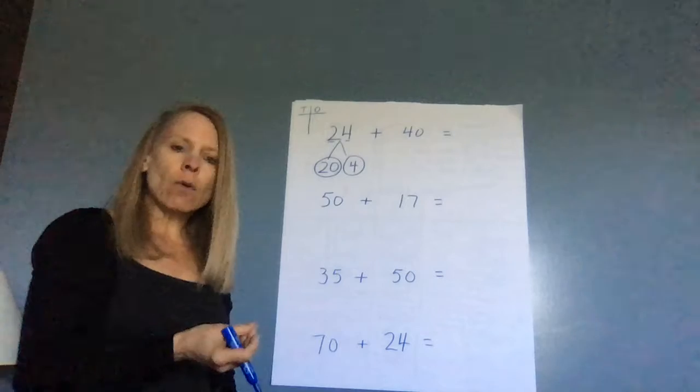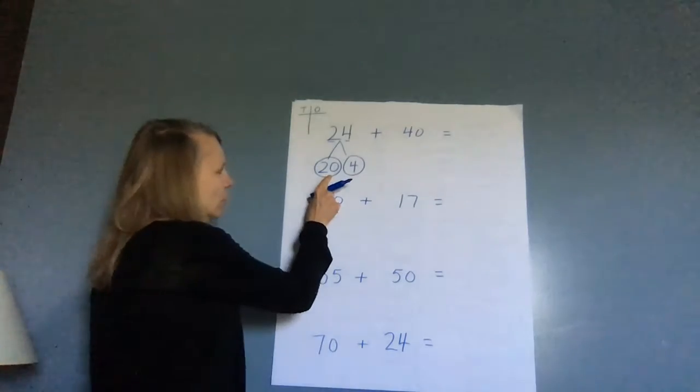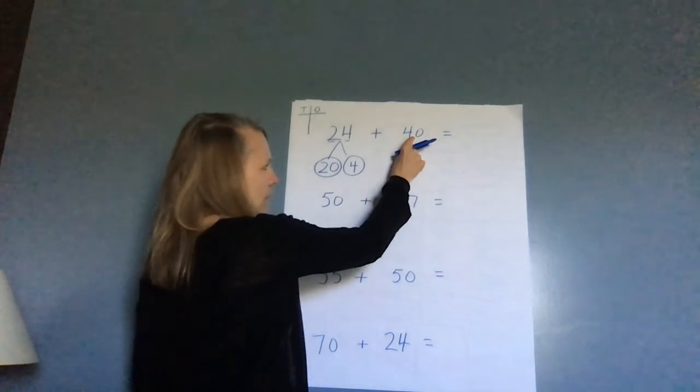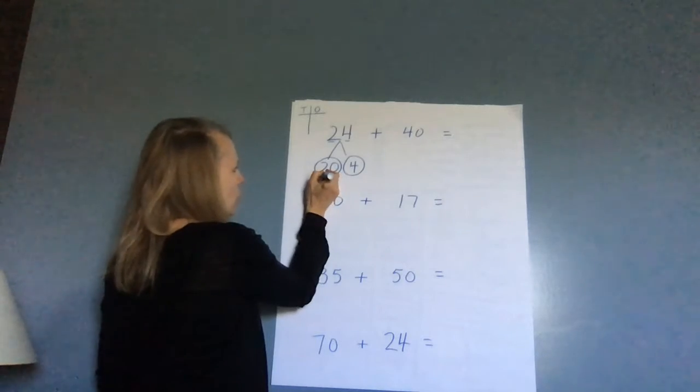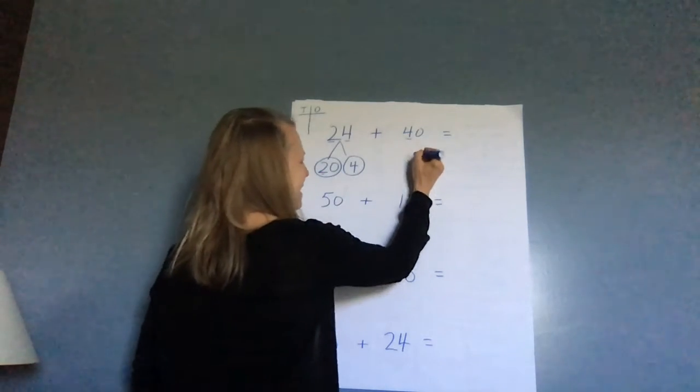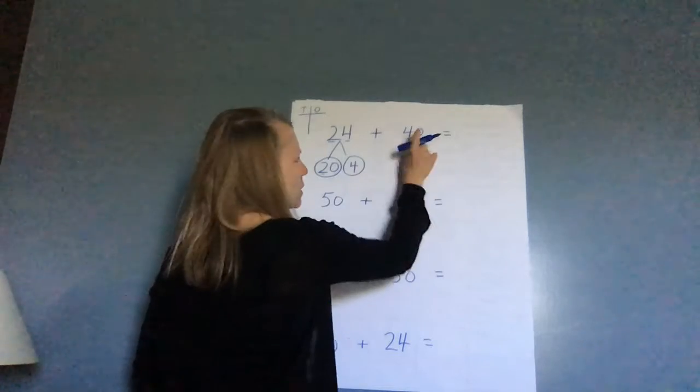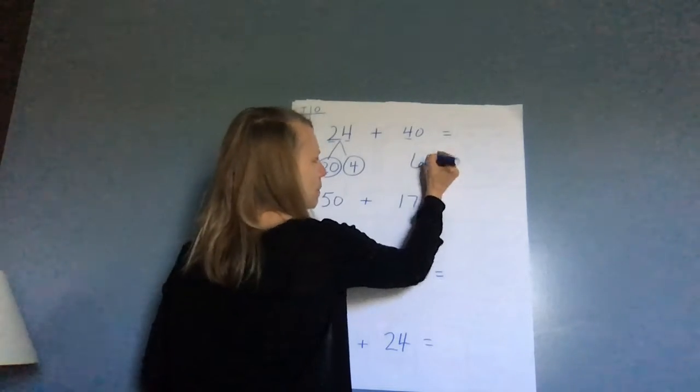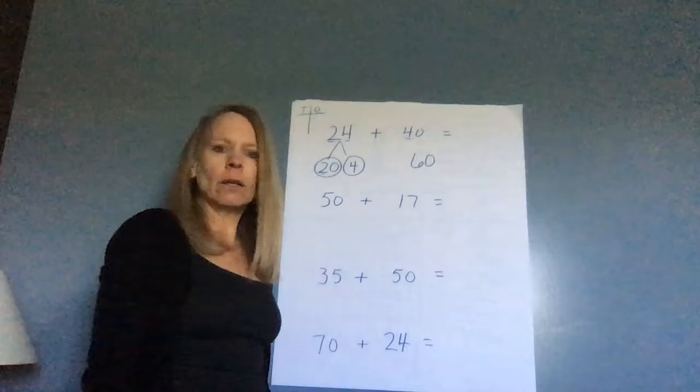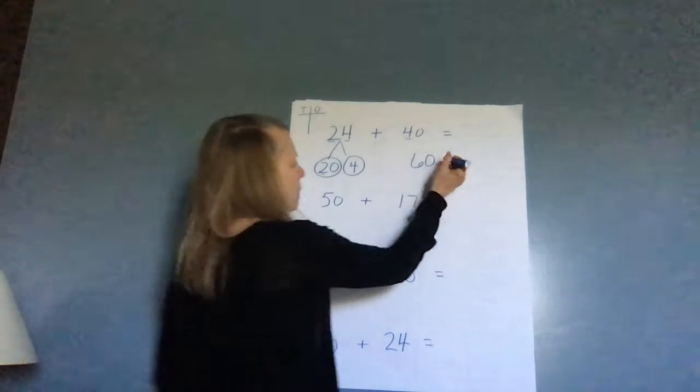So now I want to add together my 20 plus 40. Well, I know two plus four is six, and then I'm just going to put my zero at the end.